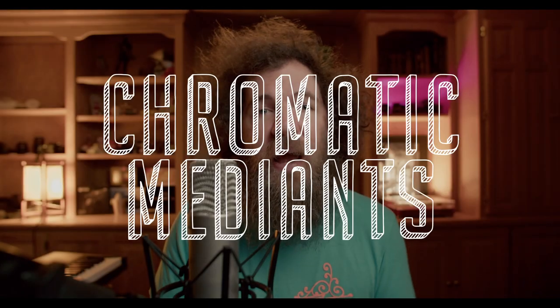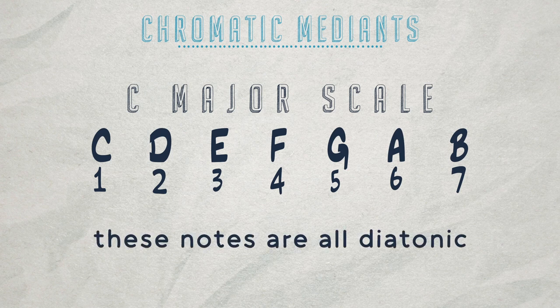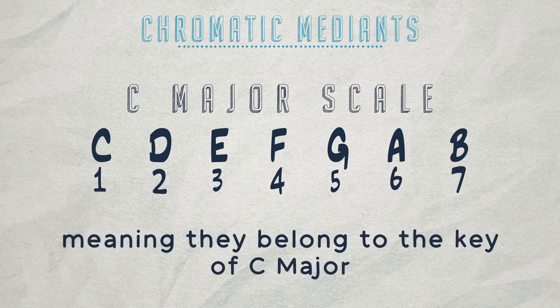Hello everybody and welcome to today's video where we're going to be talking about chromatic medians. Let's start by looking at the C major scale. There are seven notes total and these are all diatonic, meaning they belong to the key of C major.